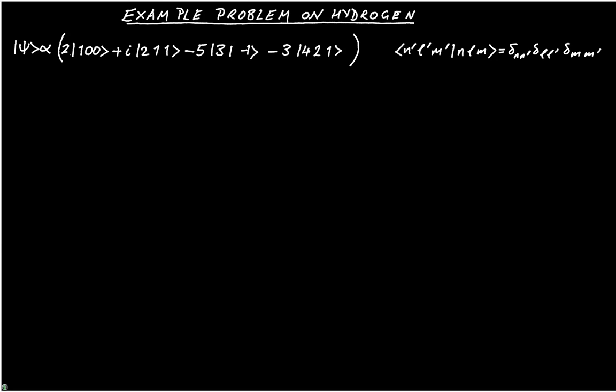Now the first task that we need to do is to normalize the wave function. We normalize by requiring that ⟨ψ|ψ⟩ is equal to 1.